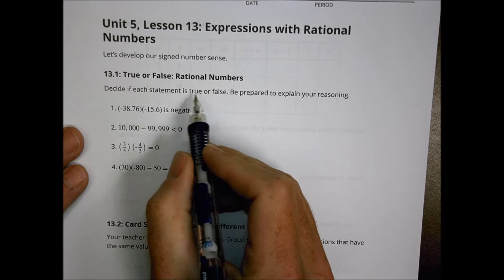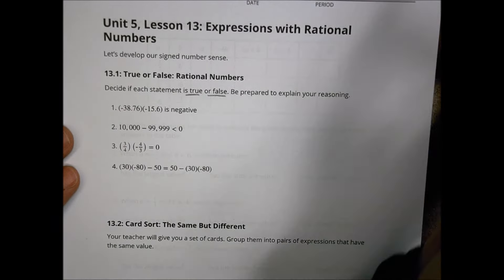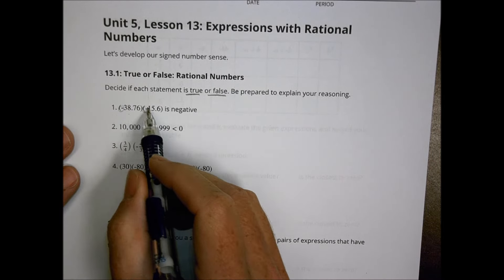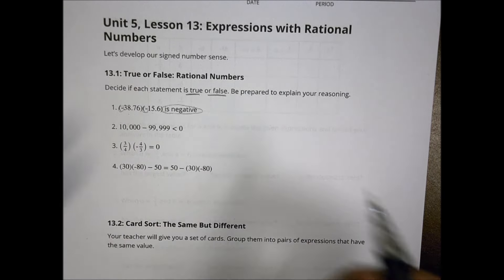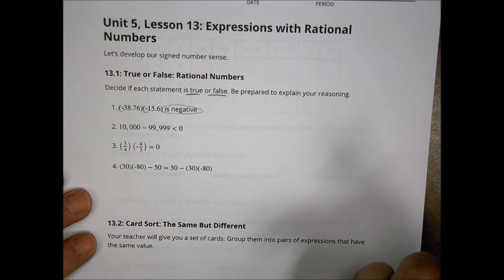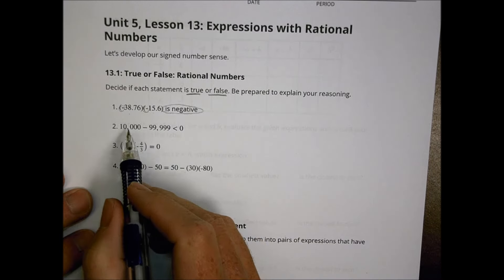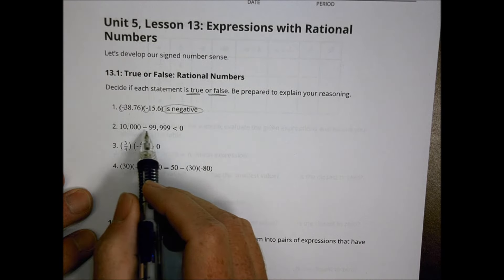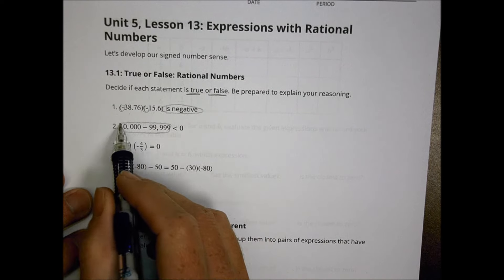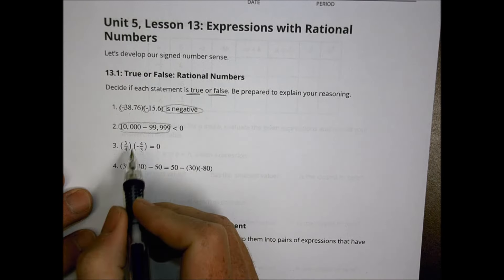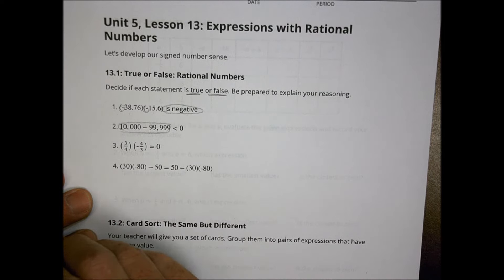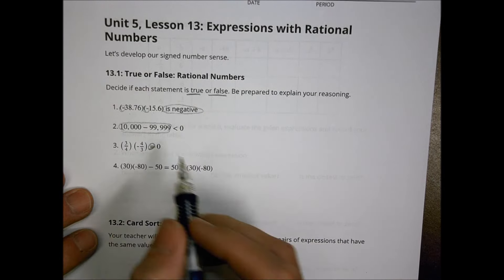First: true or false, rational numbers. Decide if each statement is true or false, and be prepared to explain your reasoning. If you have a negative number times a negative number, is that negative? You need to decide if that's true or false and explain how you'd justify it.